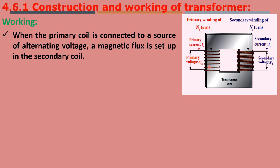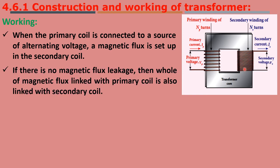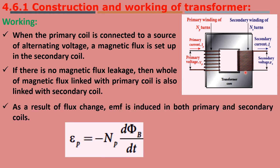When the primary coil is connected to an alternating voltage, due to mutual inductance, magnetic flux is also produced in the secondary coil. If there is no flux leakage between the primary and the secondary coil, the EMF induced in the primary coil will be equal to the EMF induced in the secondary coil. Due to flux change, EMF is induced in both primary and secondary coils.